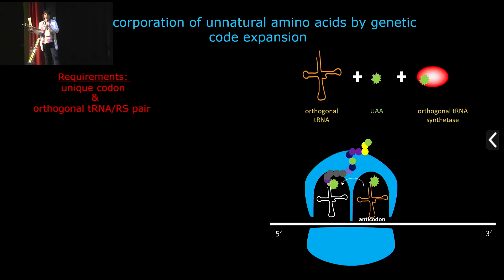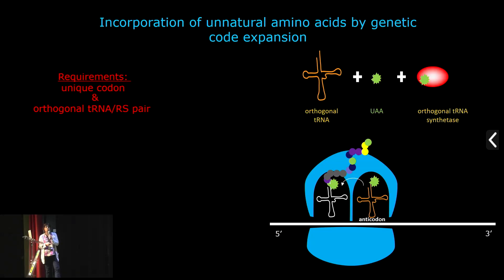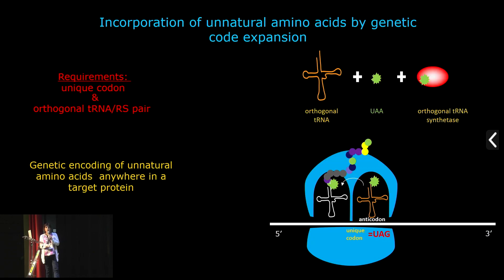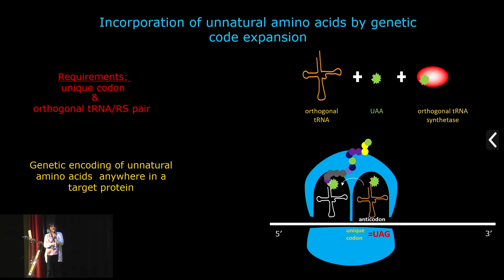If you want to incorporate unnatural amino acids into your protein of interest, you first introduce the UAG codon at almost any position in your gene of interest by site-directed mutagenesis. Then, if you provide the cells with the orthogonal tRNA synthetase and tRNA, during protein translation on the ribosome you will have pairing of codons on the mRNA with anti-codons on the tRNA, achieving genetic encoding of the unnatural amino acid anywhere you want in your protein of interest.